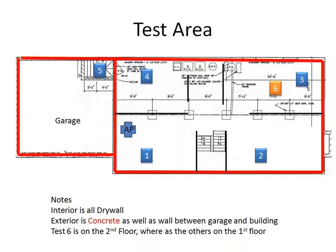A little bit about the test area — we've got my place. You can see the access points and the marked test points. The red area is concrete, and the interior black lines are all drywall. I've also changed the color of point six because it is upstairs on the second floor versus the first floor.